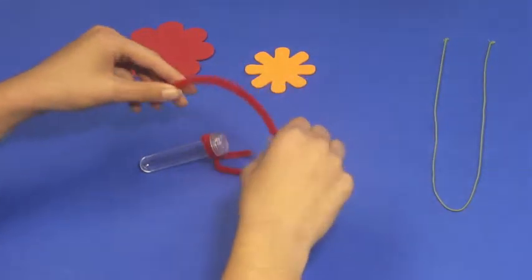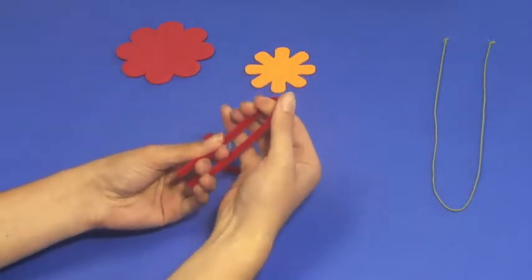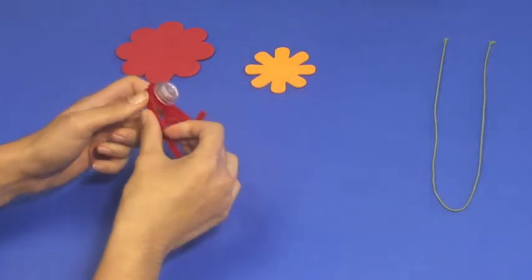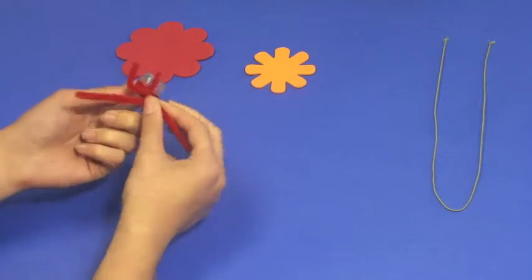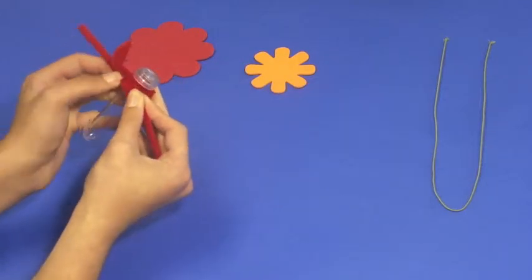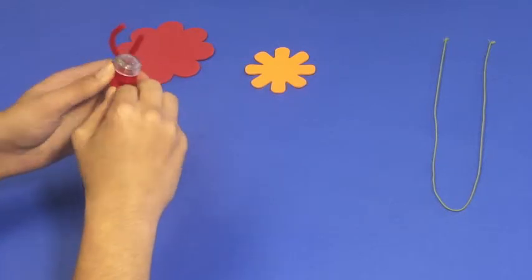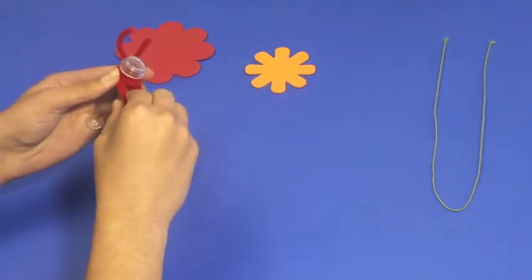Repeat this process with the other red pipe cleaner. Note that you want to start by having the ends point in the direction of the other loose ends. Then wrap it around, twist it tightly, and bend the ends in the same way.